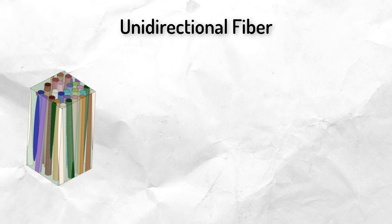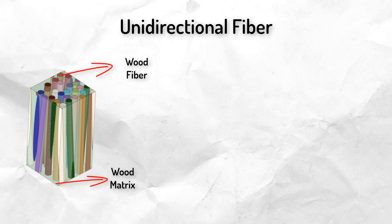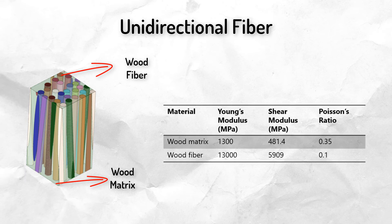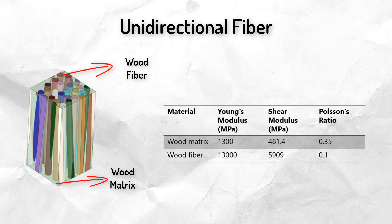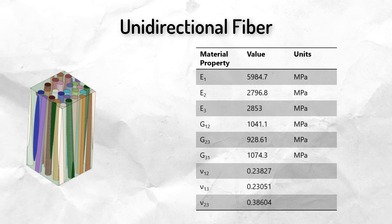Now let's look at the next representative volume unit, which again has two materials — wood matrix and wood fiber — that have different material properties. In this case, we see a clear directionality where the wood fibers are present in one direction. Let's perform a similar calculation for this unit and calculate the effective material properties. Here are the Young's modulus, shear modulus, and Poisson's ratios in three principal directions. As we can see from the values, they are different in all three directions, which makes this material anisotropic.